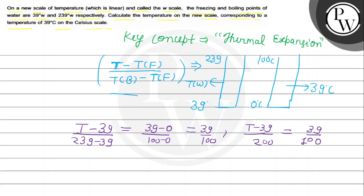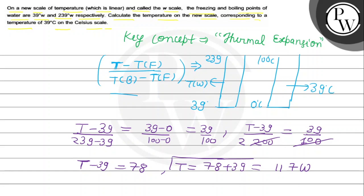Solving further: 200 times T minus 39 equals 2 into 39, which is 78. So T equals 78 plus 39, which gives us 117. The answer is 117 W. Since we started with Celsius, the answer in W scale is 117 W. I hope you understood it well, best of luck.